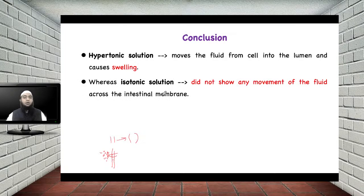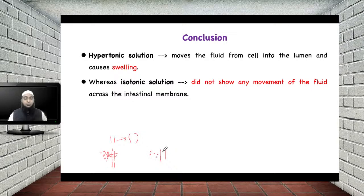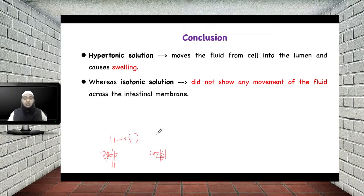In the case of the second solution — isotonic solution — the cell size was the same. The observation was that isotonic solution did not show any movement of fluid across the intestinal membrane. This happened because using 0.9% NaCl, the same salt concentration is present in the cell as well. Since the same salt concentration is present in the cell, there is no net movement of water — or the same amount of water moves from cell to lumen and from lumen to cell. As a result, when you observe after 20 minutes, you see the same size of the intestine with no change.